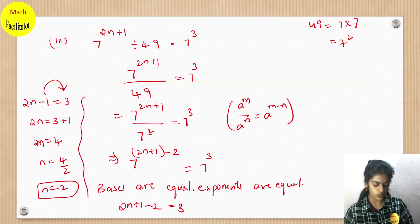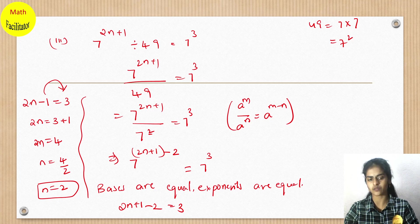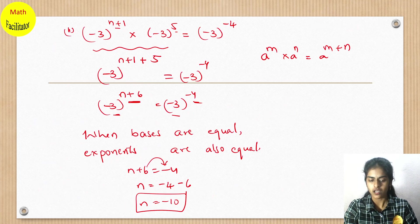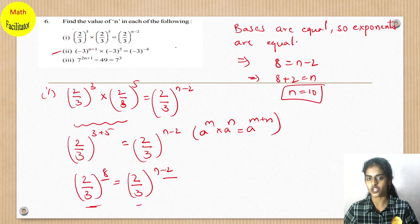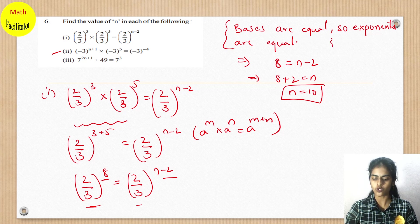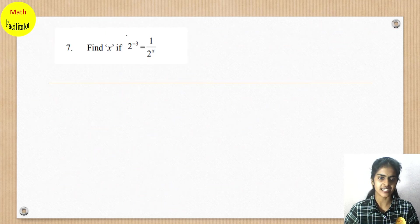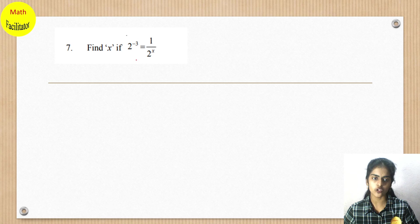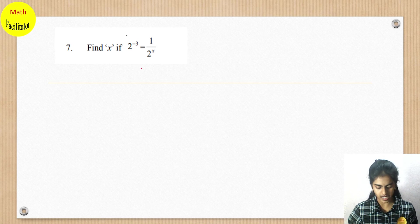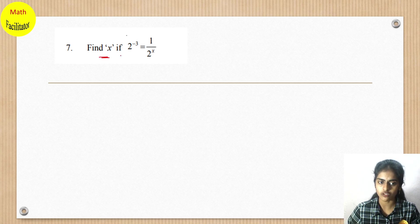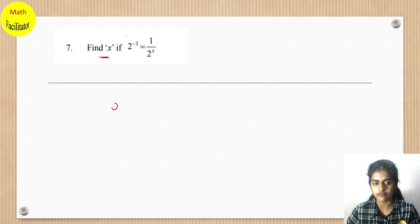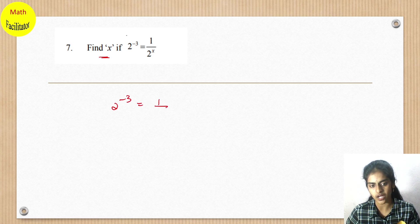The entire sixth question is based on one simple logic: if bases are equal, exponents are also equal. Now question 7 — here you will have to find the value of x. You have 2^(-3) equals 1 ÷ 2^x.